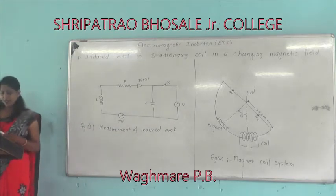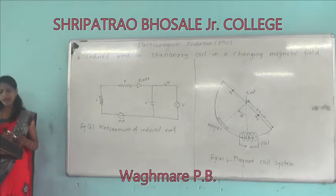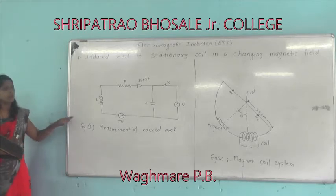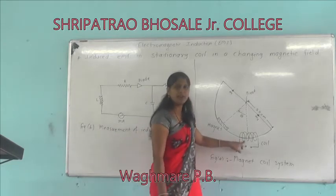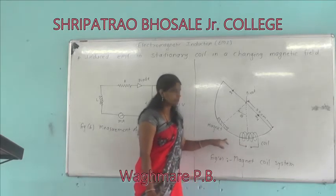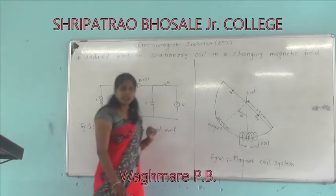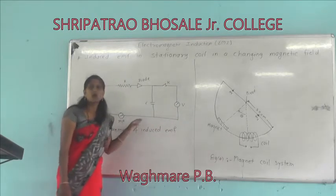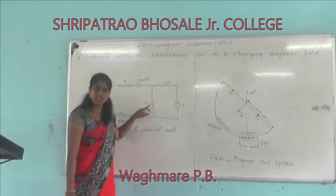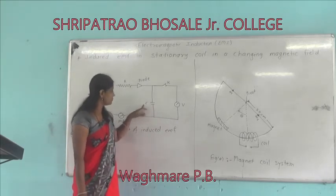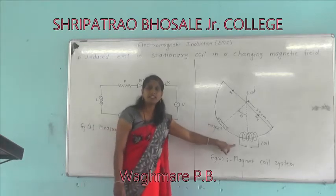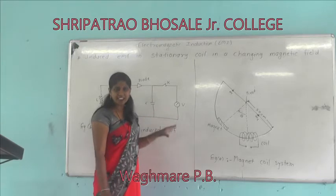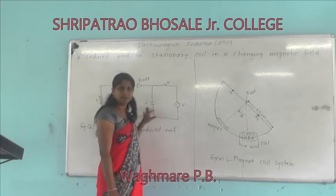To measure the induced EMF, the capacitor and diode are connected across the coil. The induced EMF is used to charge the capacitor. C is the capacitance of this capacitor. The induced EMF in this coil is used to charge the capacitor.